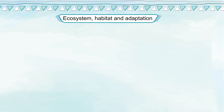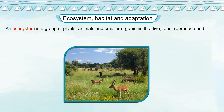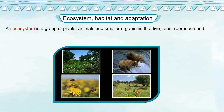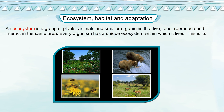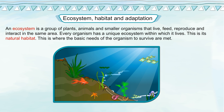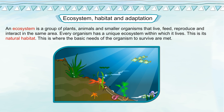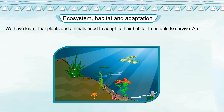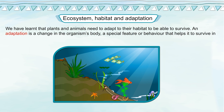Ecosystem and Habitat: An ecosystem is a group of plants, animals and smaller organisms that live, feed, reproduce and interact in the same area. Every organism has a unique ecosystem within which it lives — this is its natural habitat, where the basic needs of the organism to survive are met. Plants and animals need to adapt to their habitat to be able to survive. An adaptation is a change in the organism's body, a special feature or behavior that helps it survive in its habitat.